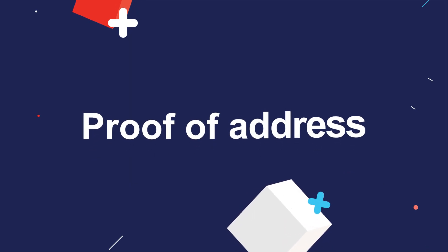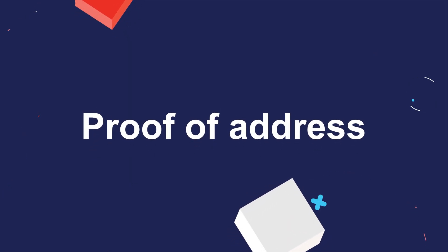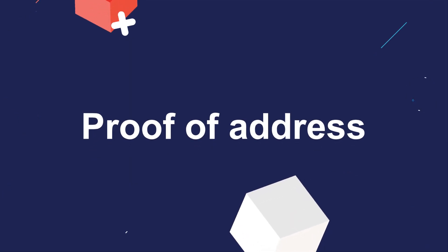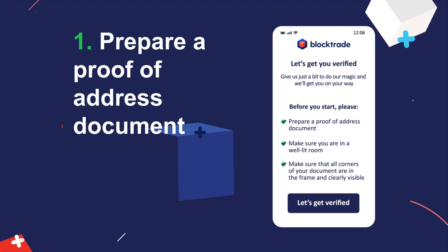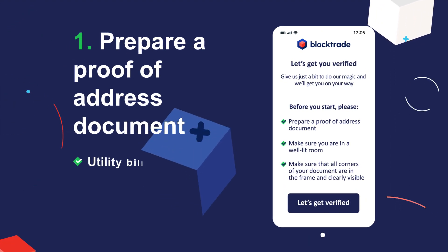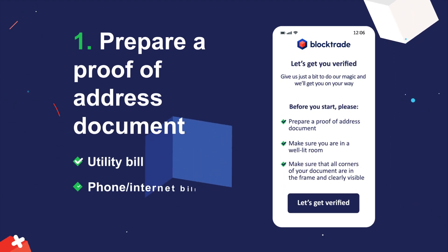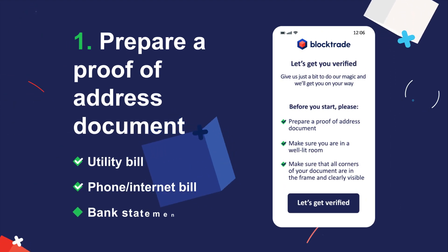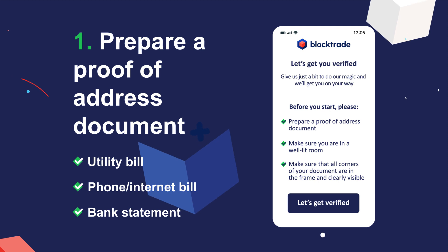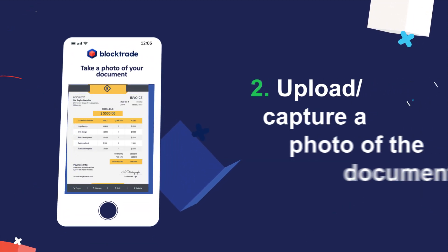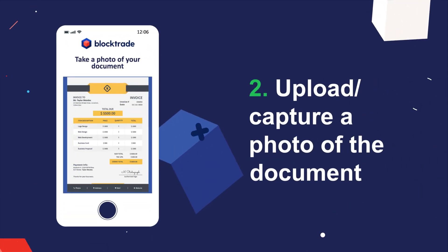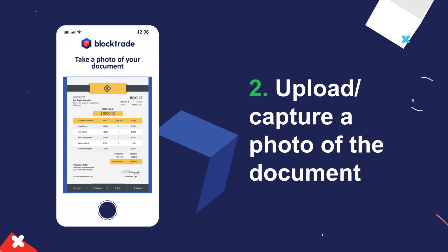Now it's time to prove your address. First, prepare a proof of address document like a utility bill, phone bill, internet bill, or a bank statement. Second, upload or capture a photo of the document.